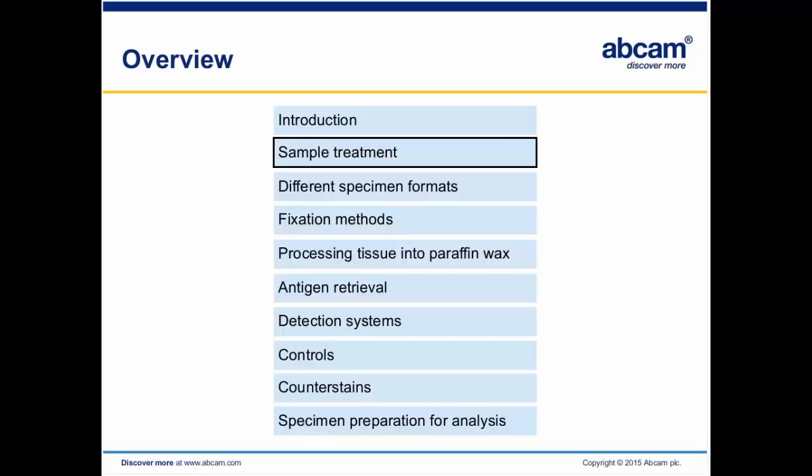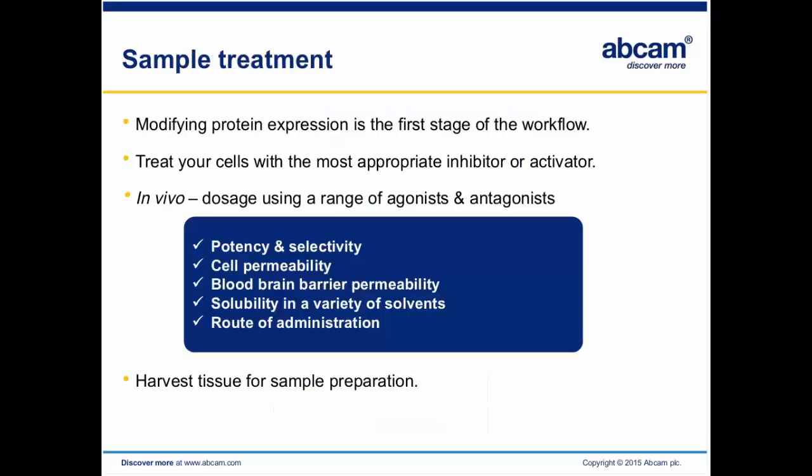Sample treatment refers to modifying the protein expression in your sample, whether that's cells or within an animal in vivo. If you're working with cells, you may need to treat them with an appropriate inhibitor or activator to up-regulate or down-regulate a protein. If you're working in vivo, it's the same concept — up-regulating or down-regulating protein expression — but there are many more factors to consider because it's a living animal.